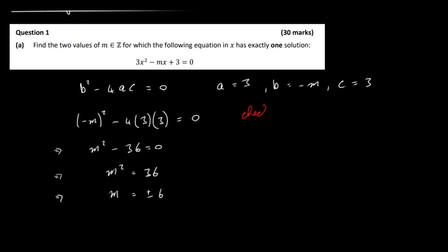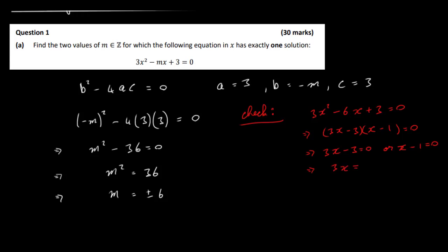This is a check — it didn't ask us to do this, so don't worry about it. We had 3x squared, and putting in m equals plus 6, it's minus 6x plus 3 equal to 0. Factorising gives us 3x minus 3 times x minus 1 equal to 0, so x equals 1 from both factors. We only get one solution when m is 6.